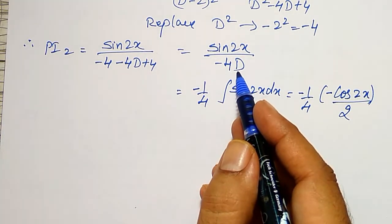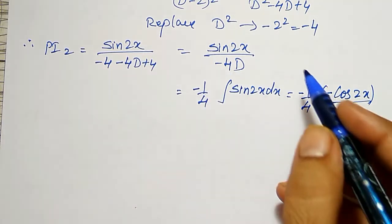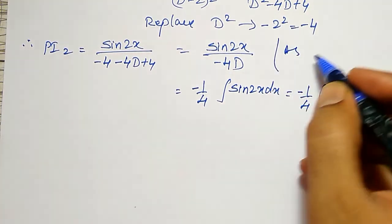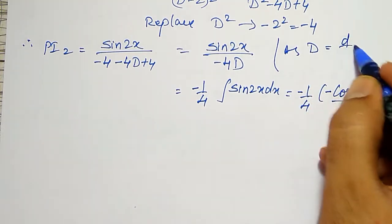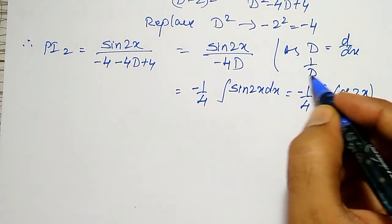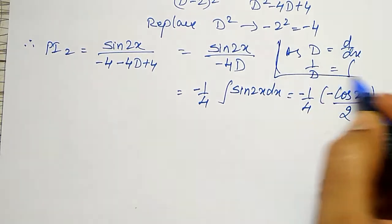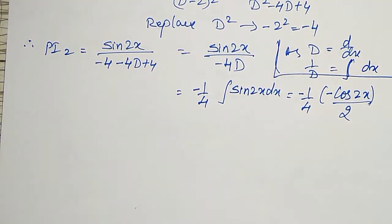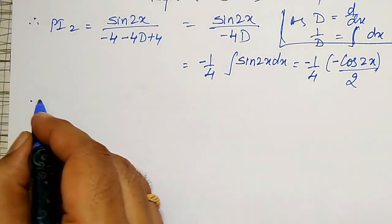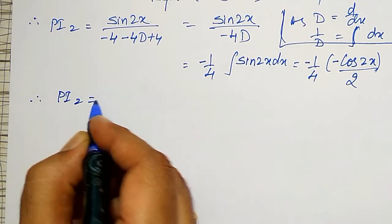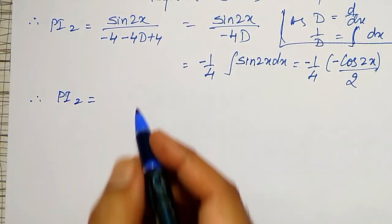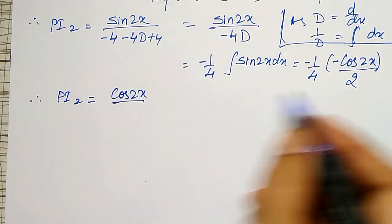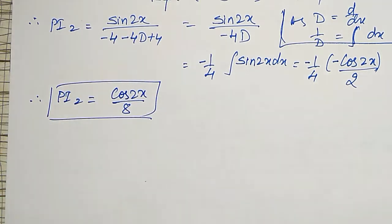1/D is nothing but integration, because D equals d/dx, so 1/D is integration with respect to x. Therefore, PI2 is equal to cos 2x divided by 8.